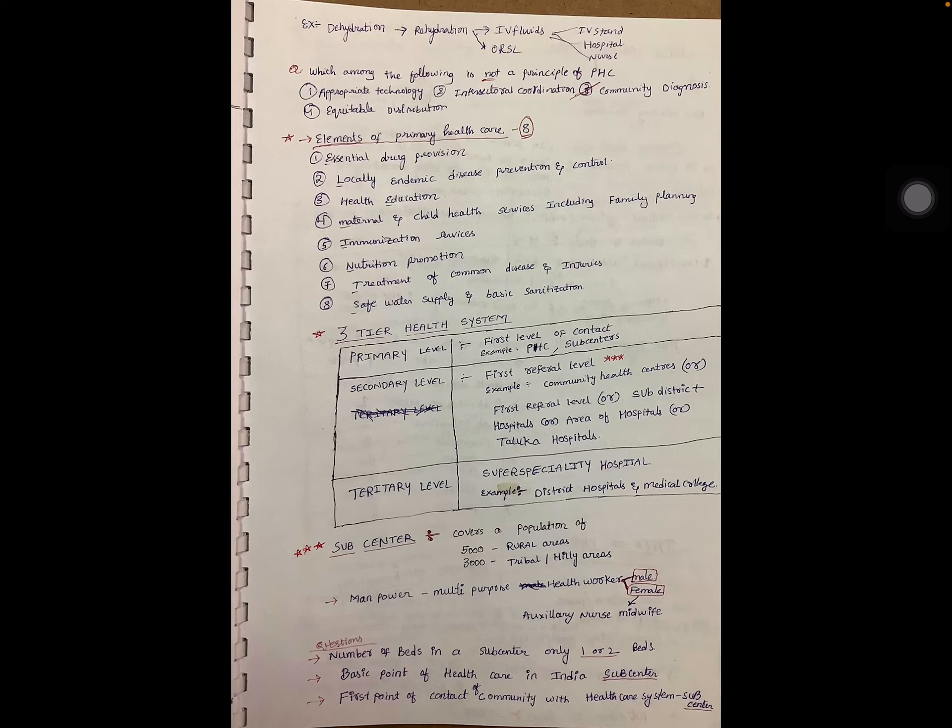There are eight elements of primary health care. First: essential drug provision. Second: locally endemic disease prevention and control. Third: health education. Fourth: maternal and child health services including family planning. Fifth: immunization services. Sixth: nutrition promotion. Seventh: treatment of common diseases and injuries. Eighth: safe water supply and basic sanitation.